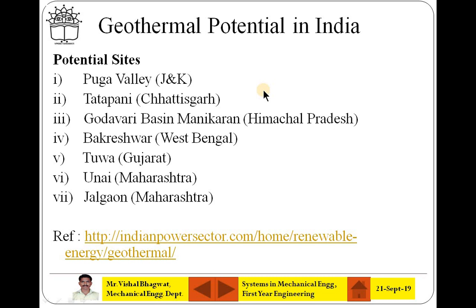As far as the scenario in India is concerned, there are very few potential sites in India. Although India is one of the earliest countries to take initiative in geothermal power plant and electricity production through that, India has not installed any geothermal power plant which will be producing electricity. However, these potential sites can generate almost 10,600 megawatt of energy in direct use. The potential sites are: Puga Valley in Jammu and Kashmir, Tattapani in Chhattisgarh, Godavari Basin and Manikaran in Himachal Pradesh, Varkeshwar in West Bengal, Tuwa in Gujarat, Unai in Maharashtra, and Jalgaon in Maharashtra.